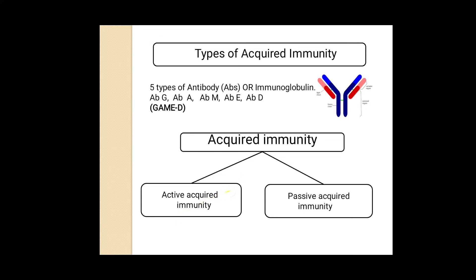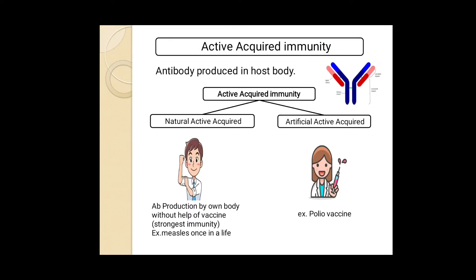Let's start with active acquired immunity. If antibodies are produced in the host body itself, then that response is called active acquired immunity — the word 'active' refers to producing your own antibodies. Active immunity is again divided into two types: natural active acquired immunity and artificial active acquired immunity. If you are perfectly healthy, have not taken any vaccine, but a pathogen enters your body and your immune system produces antibodies, then this response is called natural active acquired immunity.